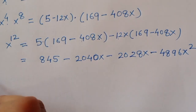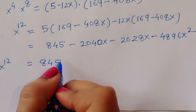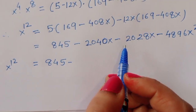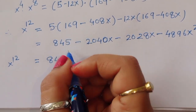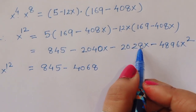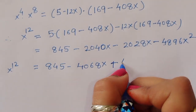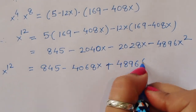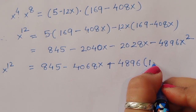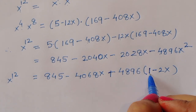So x^12 = 845 - 2040x - 2028x + 4896x². Adding the x terms: -4068x. Now substituting x² = 1 - 2x from equation 3: x^12 = 845 - 4068x + 4896(1 - 2x).